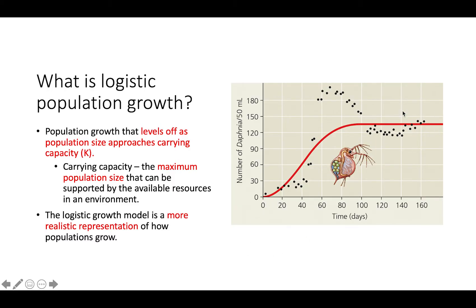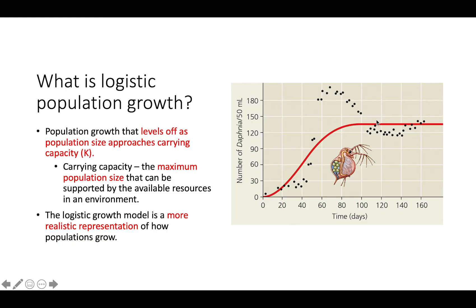The logistic growth model tends to be a more accurate representation of how populations grow, because populations tend to start as exponential growth. You can even see that in the logistic growth model, the beginning looks closer to an exponential growth model. But then once we hit that carrying capacity and resources start to become limited, we start to level off and create this logistic growth pattern once that population nears carrying capacity.